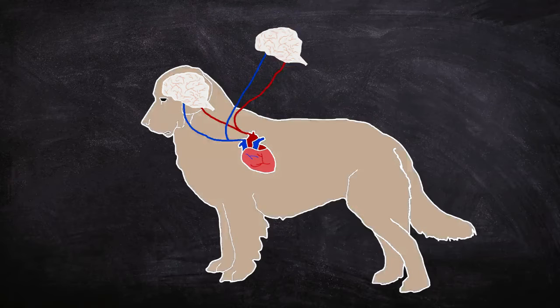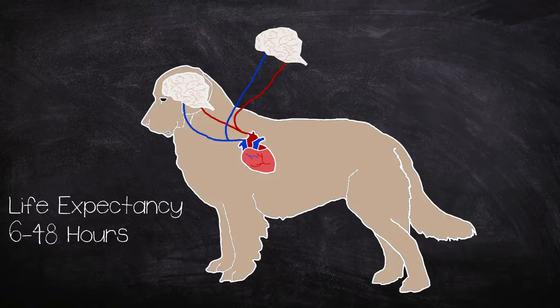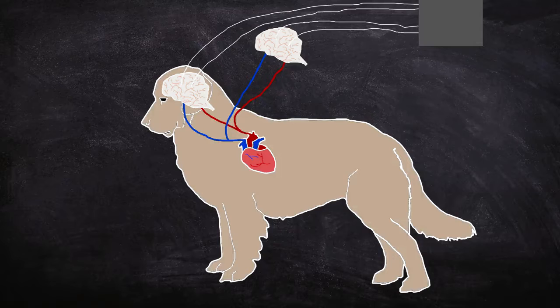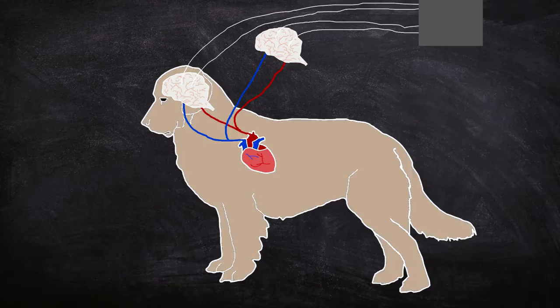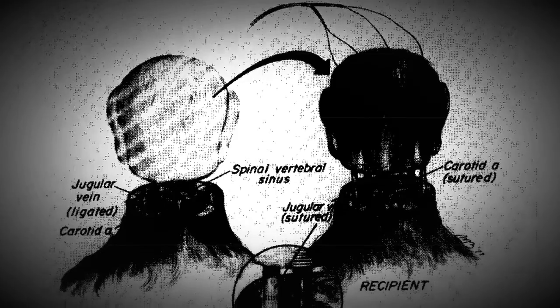Using this method, White was able to successfully graft six canine brains to the cervical vasculature of six other dogs. Although the surgeries were successful, the dogs lived between six hours and two days post-experiment. Using monitoring equipment implanted in the brains showed good oxygen and glucose consumption, meaning they had a good metabolic state post-surgery. The experiment showed the feasibility of short-term isolated brain transplant.